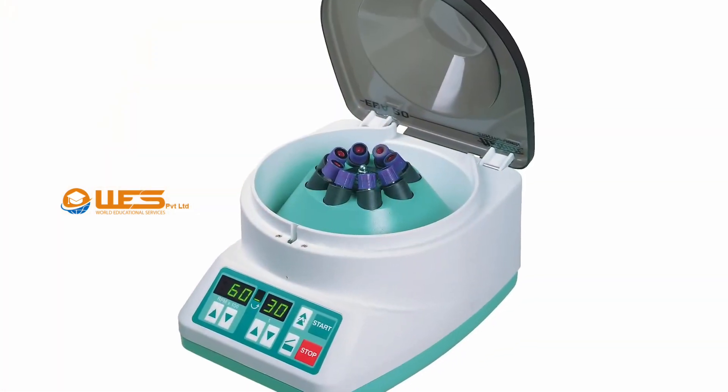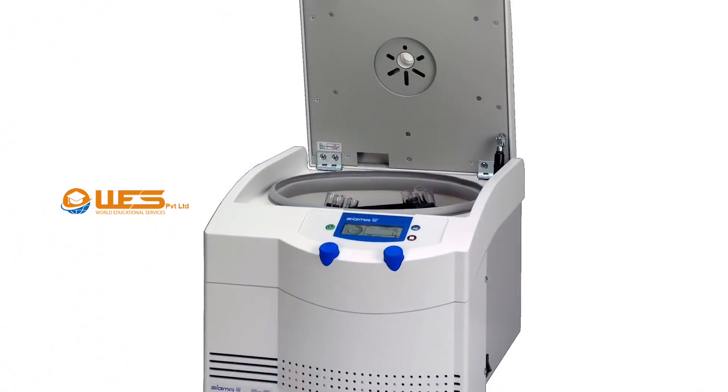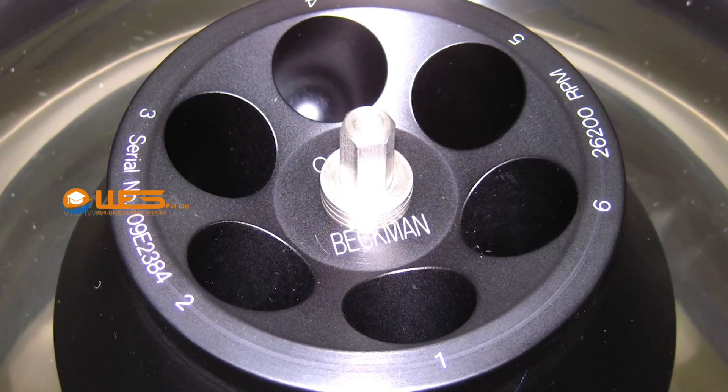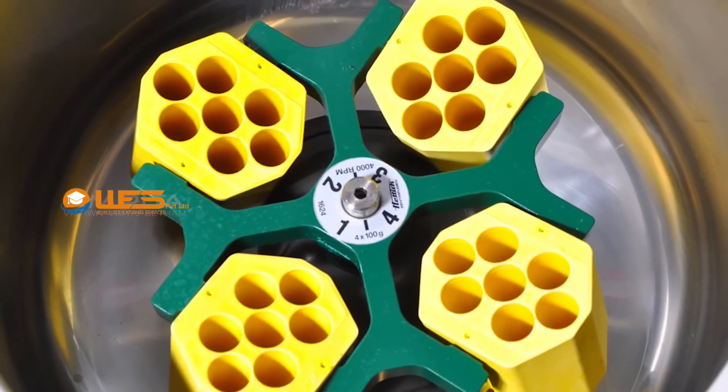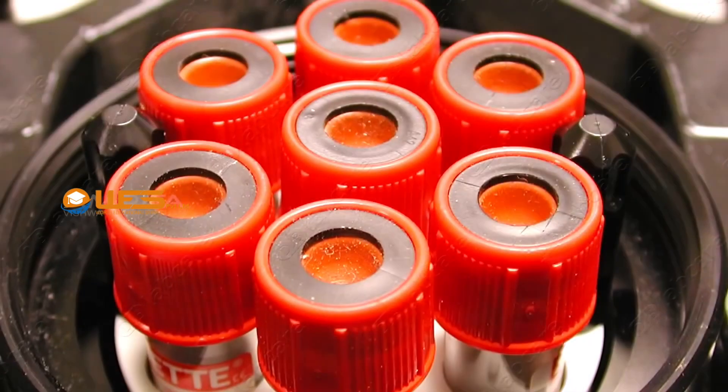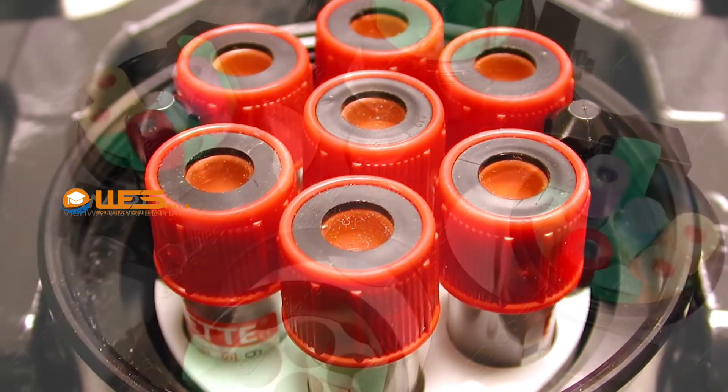The apparatus used for centrifugation is called a centrifuge. The centrifuge consists of a centrifuge tube holder called a rotor. The rotor holds balanced centrifugal tubes of equal amounts of the solid-liquid mixture.